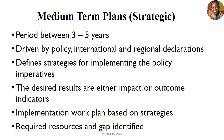The desired results are either impact or outcome focused. The plans are strategic and you're looking into the specific impact the policy might bring. For example, if you are targeting to reduce death rates in a given country by 10%, then the medium-term plans will specifically highlight which strategies and activities the country will undertake to reduce those rates.